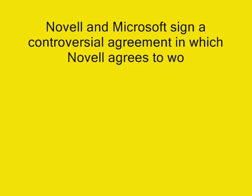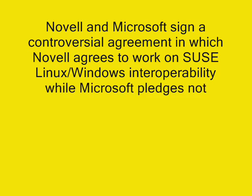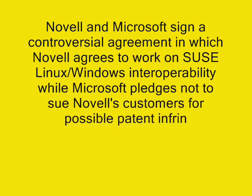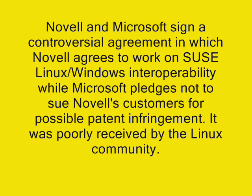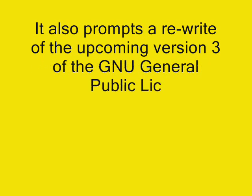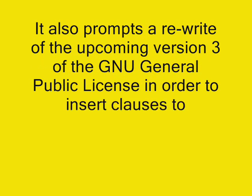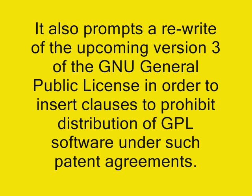November 2006: Novell and Microsoft sign a controversial agreement in which Novell agrees to work on SUSE Linux–Windows interoperability, while Microsoft pledges not to sue Novell's customers for possible patent infringement. The agreement is poorly received by the Linux user community. It also prompts a rewrite of the upcoming Version 3 of the GNU General Public License in order to insert clauses to prohibit distribution of GPL software under such patent agreements.